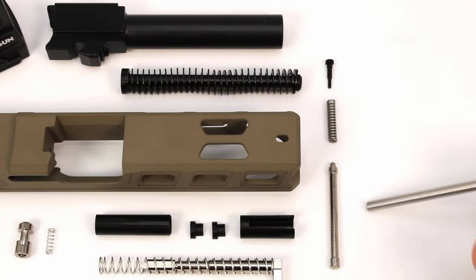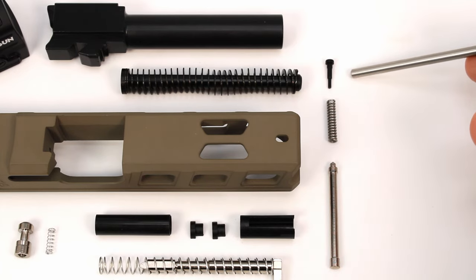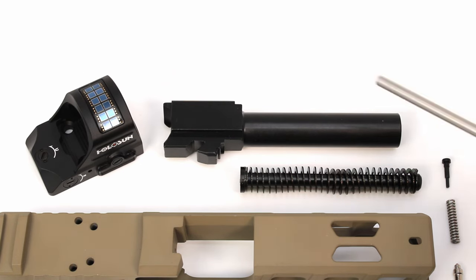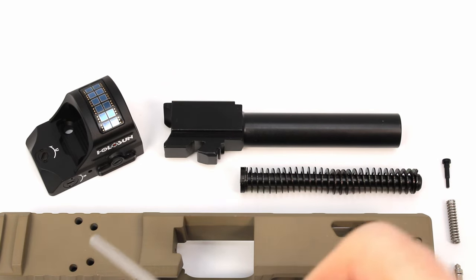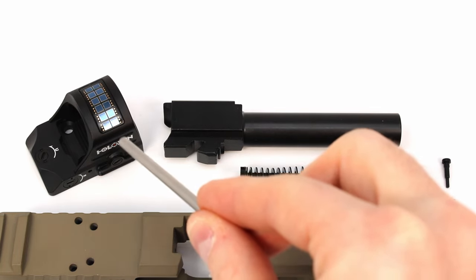Then we have the channel liner that helps position the firing pin inside the slide. On the side here we have our extractor depressor plunger, the plunger spring, and this small plastic spring-loaded bearing. Last but not least, we have our barrel with our recoil spring. And since the LFA Elite slide is cut for an RMR type optic, we're also installing a Holosun red dot.